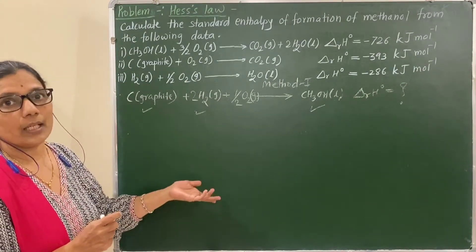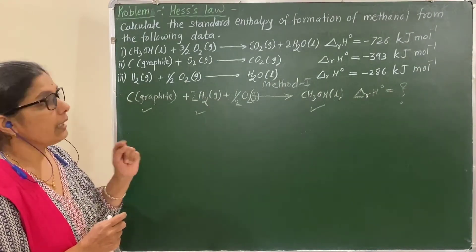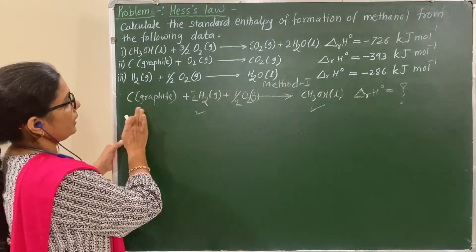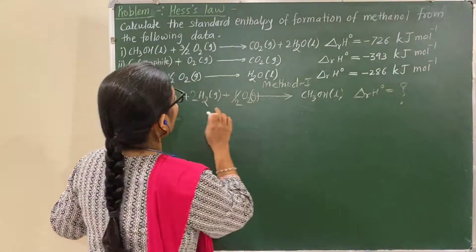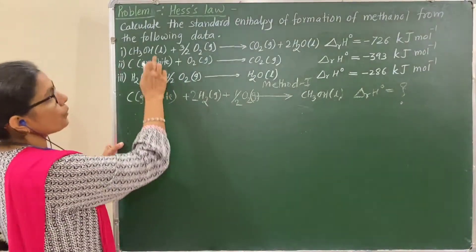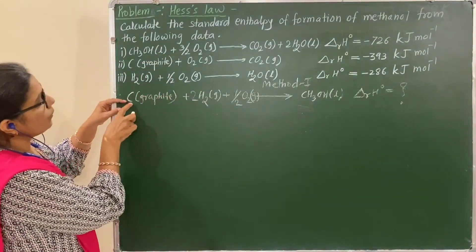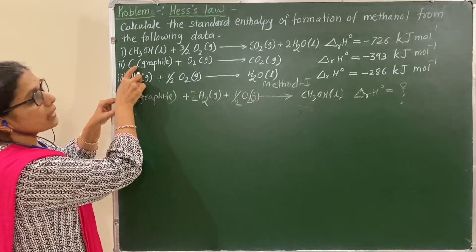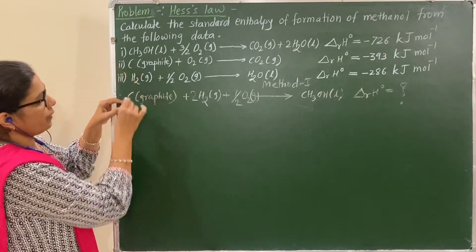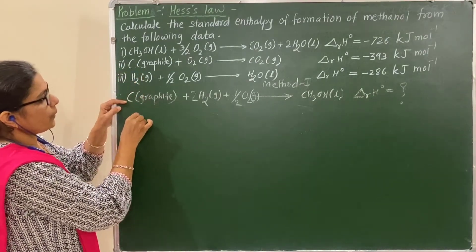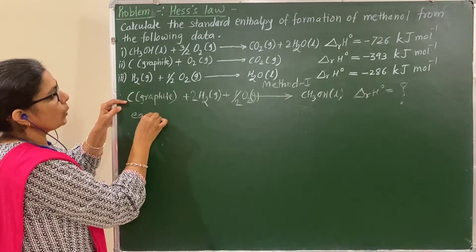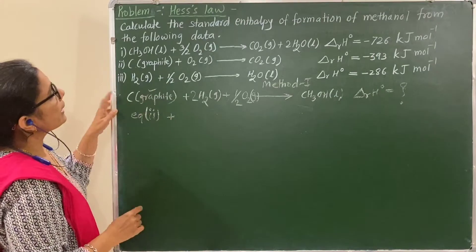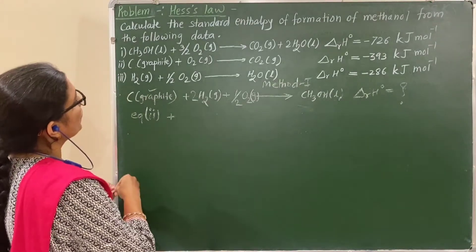Let us see the methods one by one. Method 1: obtain the required equation from these three equations. We require carbon, that is graphite, which is present in equation number 2, therefore we use equation number 2. Next, we require 2H₂.